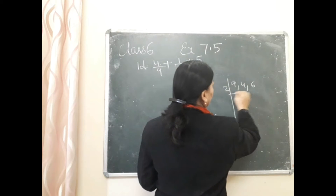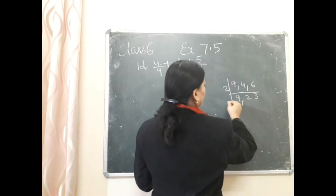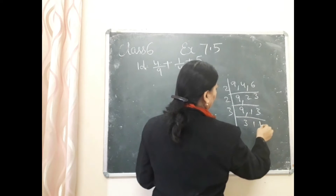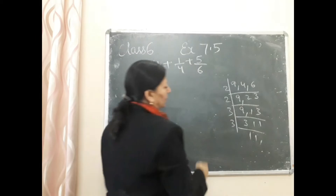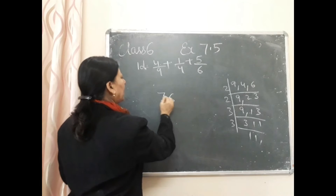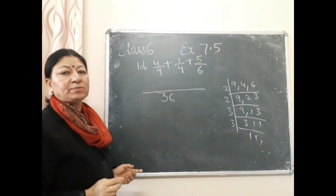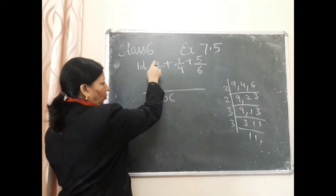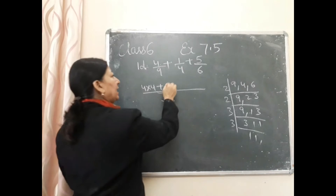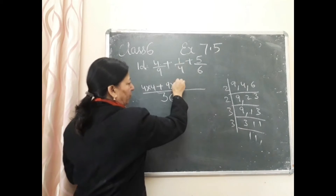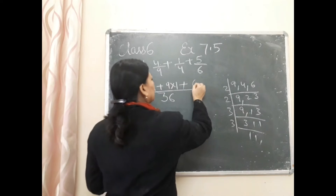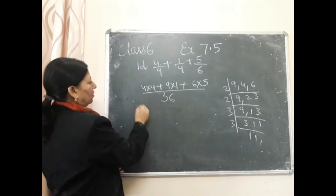9, 4, 6 का LCM निकालते हैं। 2 से divide करें: 9, 2, 3 → फिर 2 से: 9, 1, 3 → फिर 3 से: 3, 1, 1 → फिर 3 से: 1, 1, 1। तो LCM = 2×2×3×3 = 36. अब ध्यान से देखिए: 9 की टेबल में 36, 4 बार आता है — तो 4×4 = 16; 4 की टेबल में 36, 9 बार आता है — तो 9×1 = 9; 6 की टेबल में 36, 6 बार आता है — तो 6×5 = 30.